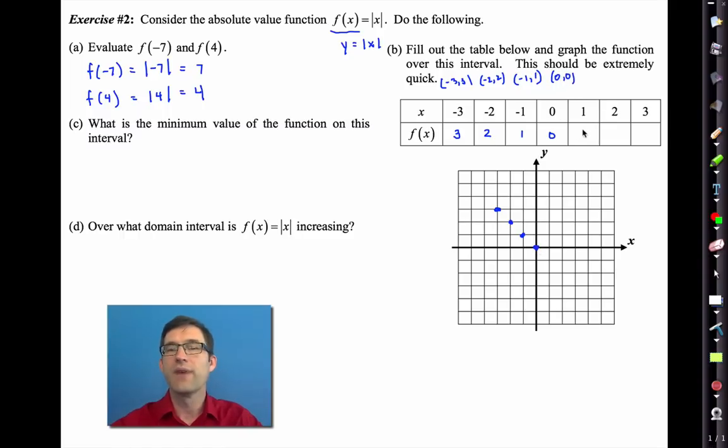Then if I do the absolute value of negative 2 I get 2 giving me the point negative 2 comma 2 right here. Then I do the absolute value of negative 1 and I get 1. So I get the graph negative 1, 1. The absolute value of 0 is 0 giving me the point 0, 0. Then the absolute value of 1 is 1 again giving me the point 1, 1. The absolute value of 2 is 2 giving me the point 2 comma 2. And the absolute value of 3 is 3 giving me 3 comma 3.